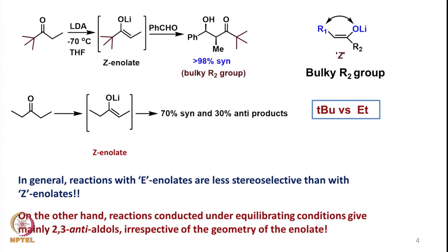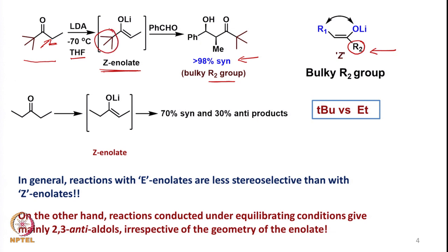For example, if we take a compound with a tert-butyl group here and an ethyl group, and the reaction is carried out in THF at low temperatures like minus 78 degrees using a base like LDA (lithium diisopropylamide), then enolization occurs from that position and we get a Z enolate. When this is reacted with benzaldehyde, the product formed is the syn product — more than 98% syn. The bulky tert-butyl R2 group is what we were saying is required, and here its presence gives very high selectivity.